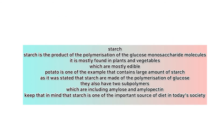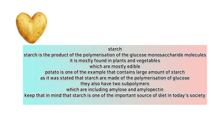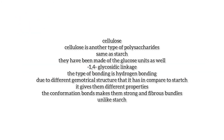Starch is the product of the polymerization of glucose monosaccharide molecules. It is mostly found in plants and vegetables, such as potatoes, which contain large amounts of starch. Starch has two sub-polymers: amylose and amylopectin. Starch is one of the most important dietary sources in today's society.